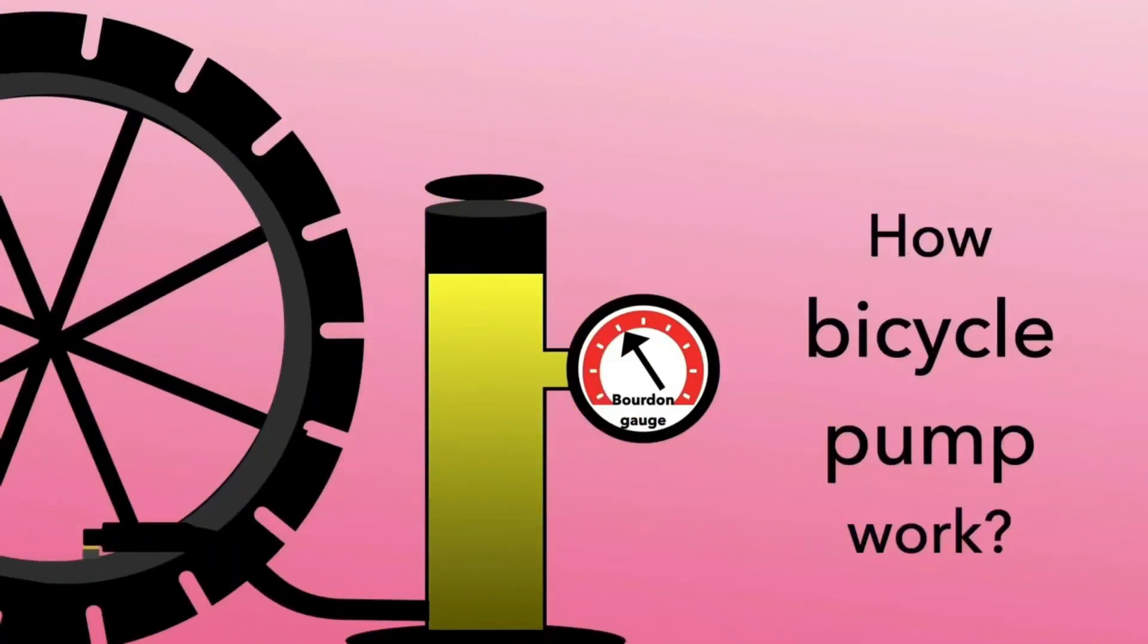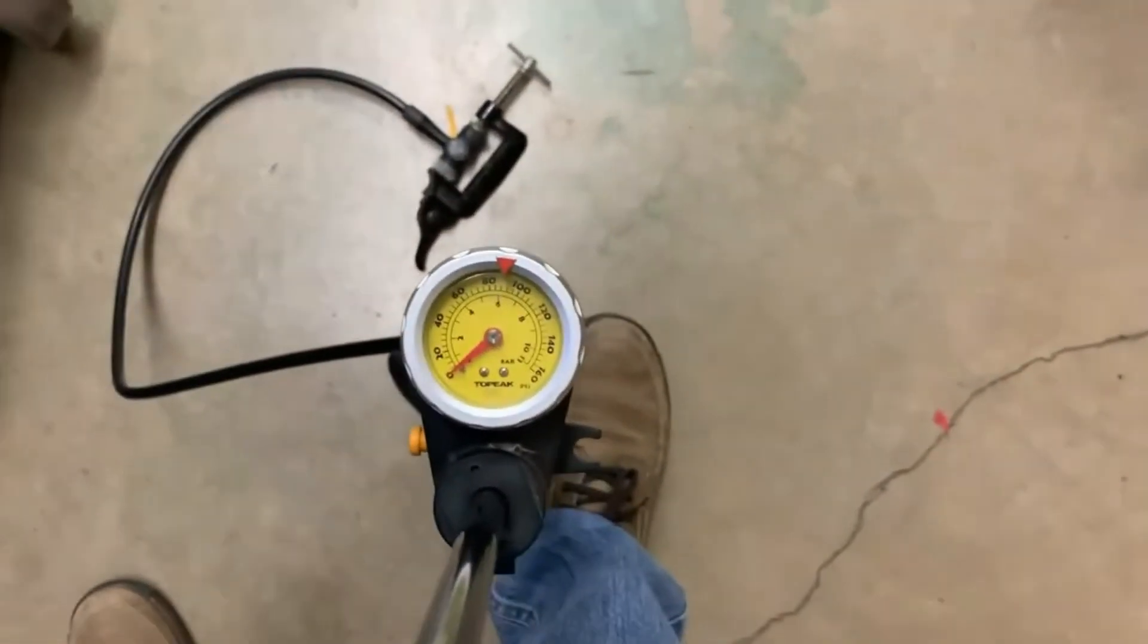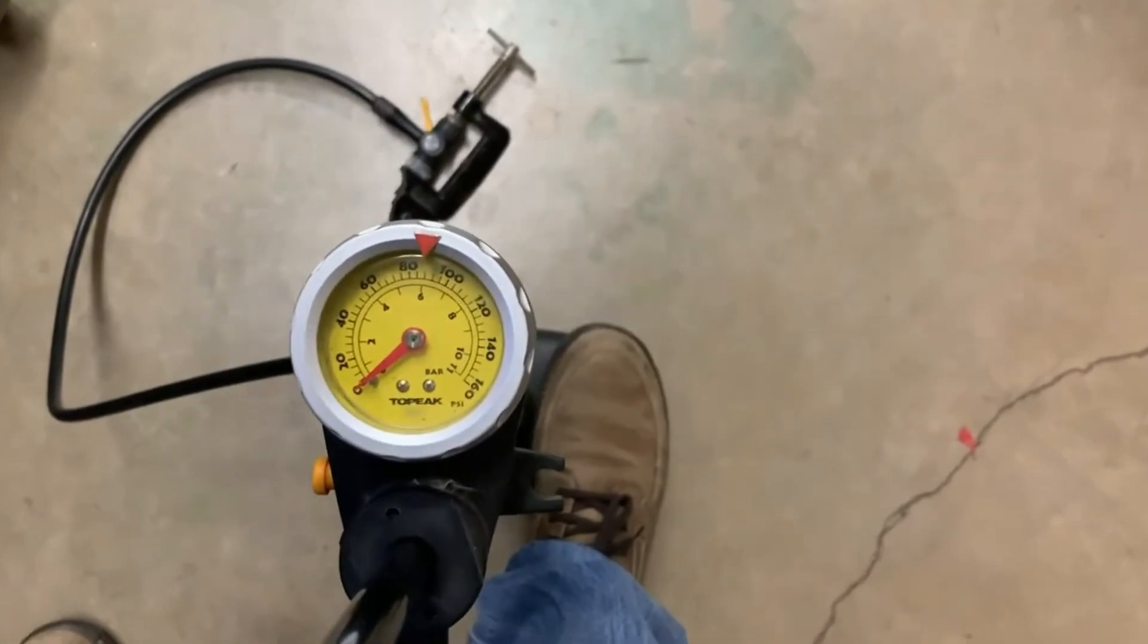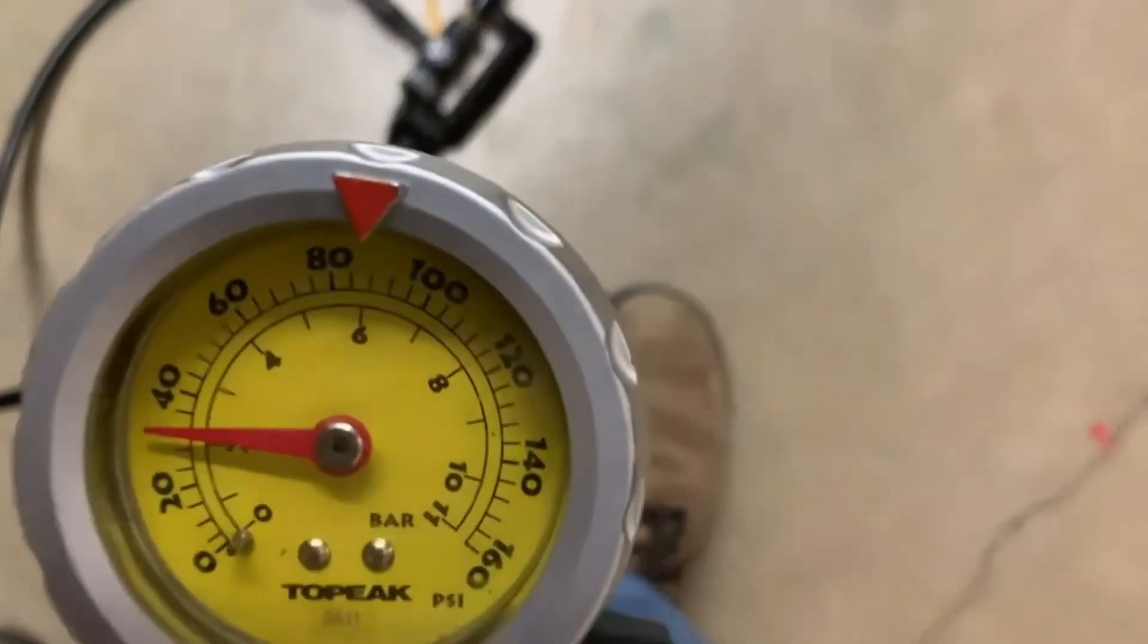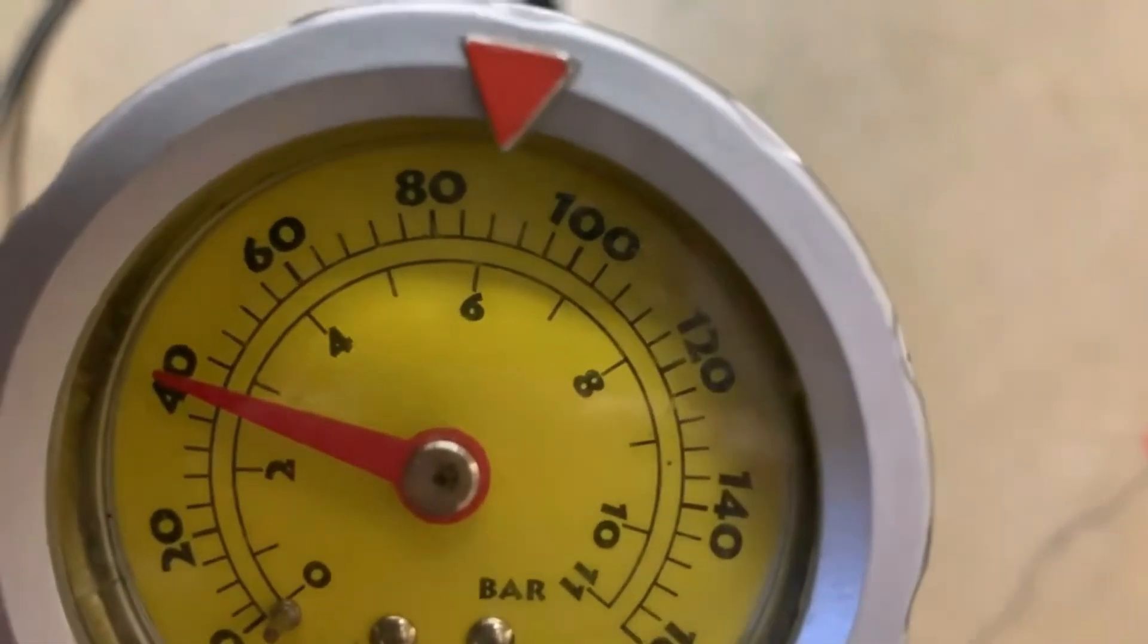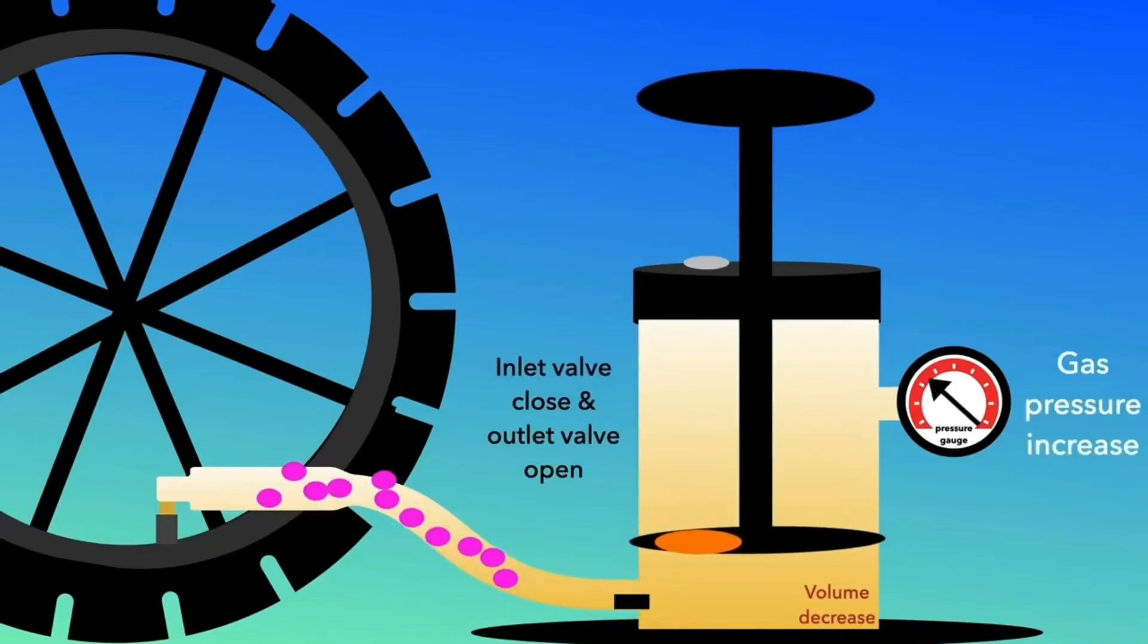A bicycle pump is also an example of Boyle's Law. As the pump is being pushed down, the pressure inside the pump will increase. In other words, the gas inside is compressed. And as a result, the gas becomes pressurized and is forced inside the tire of a bicycle.